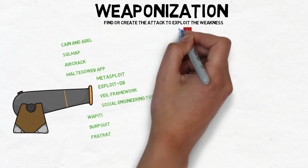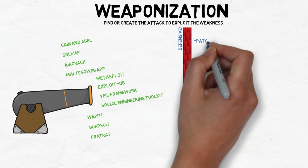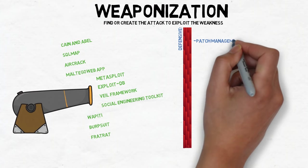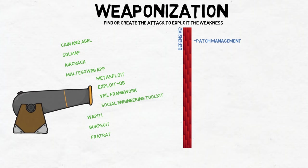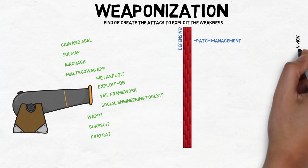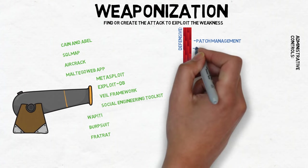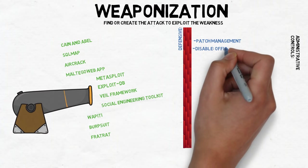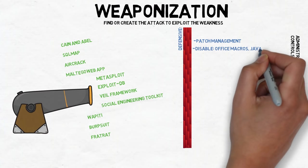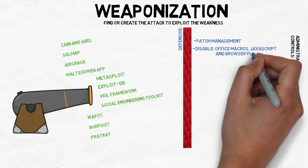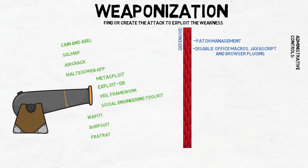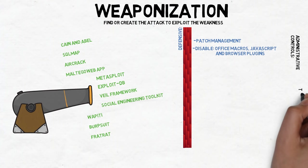Since this stage is all about what the attacker uses as a weapon, we need to have some of the basics covered. And that includes things like patch management. Patch management continues to be one of the best defensive measures against the weaponization stage. Because you can't exploit a vulnerability if there's no vulnerability to exploit. The vast majority of today's breaches are still due to unpatched servers. Office macros, JavaScript, browser plugins are all common avenues for an attacker to exploit. So disabling these alone will greatly reduce your exposure as well.